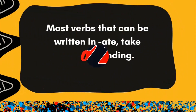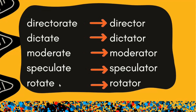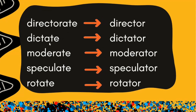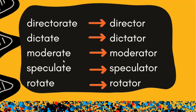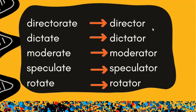Tip number two says most verbs that can be written in ATE take OR ending. Let's see some examples. The words direct, dictate, moderate, speculate, rotate — in all these words we can put the ATE ending. So if the word can have an ATE ending, it will take OR to make it an agent noun.